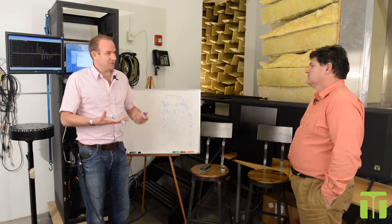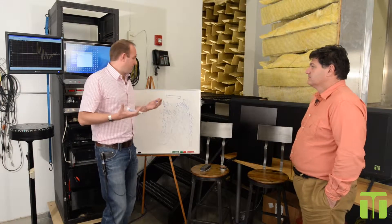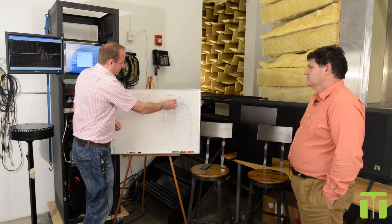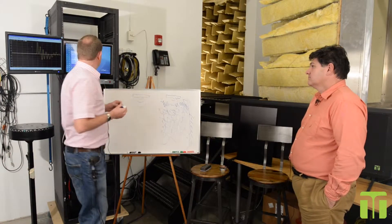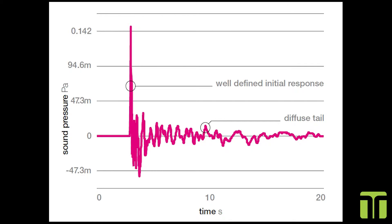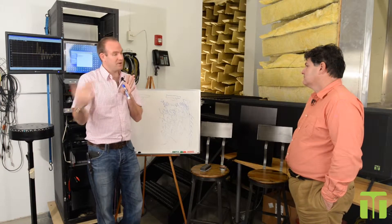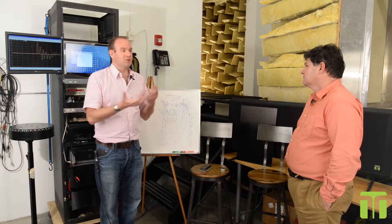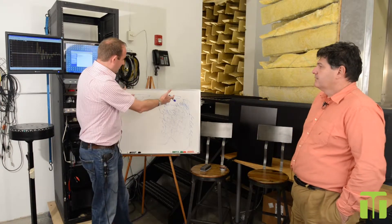If it was a purely diffuse source with no phase relationship between any of it, how would you get a stereo image? With two panels, this initial transient kick that comes out gives you the location. As we saw in the impulse response, that gives your ears the cue of where the sound is coming from. All the energy that arrives within the precedence window just contributes to the timbre and the build-up of energy that your brain perceives.